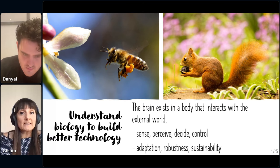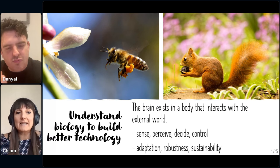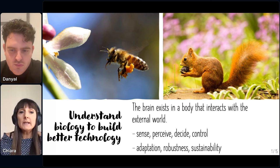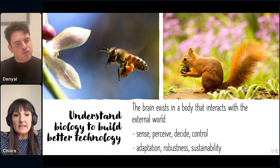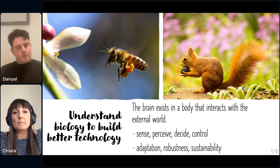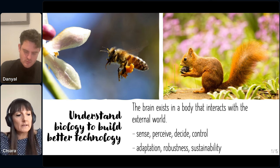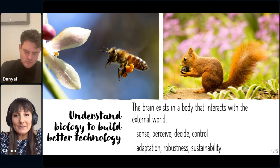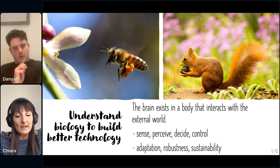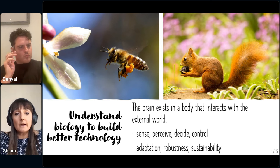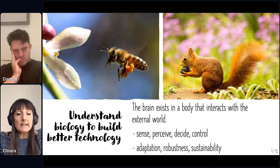In my case, the idea is to understand biology to build better technology. What you can see in these slides are two animals. This is because I think it's very important to understand the nervous system, but it's also very important to understand that the nervous system has evolved as part of a system where there's a body with sensors, with limbs and effectors that act in the real world. The characteristics of these systems will be that they will be adaptive, robust, and very efficient in terms of energy, and that's why you see here the word sustainability.